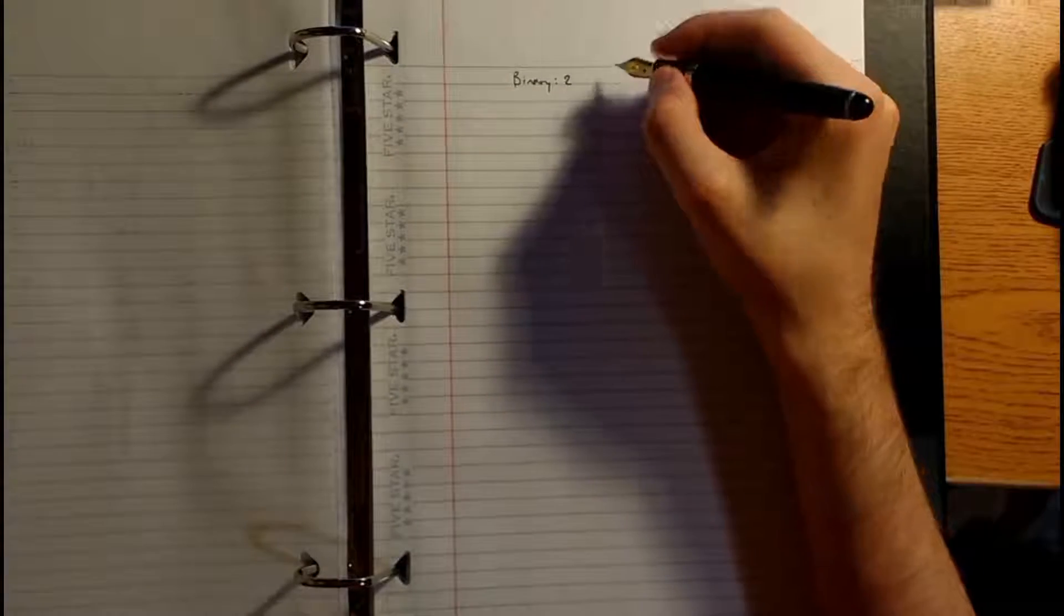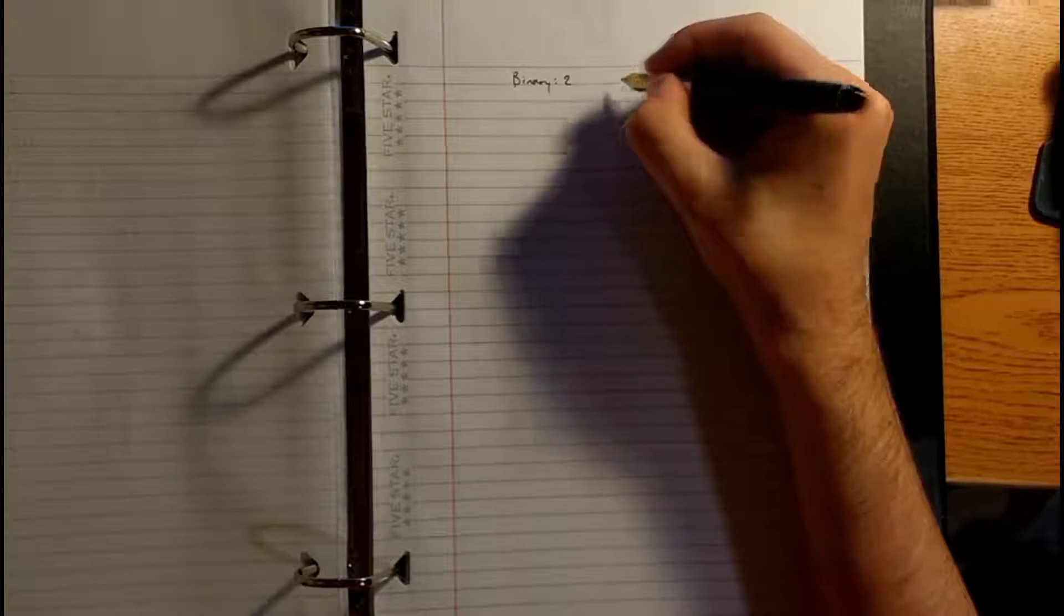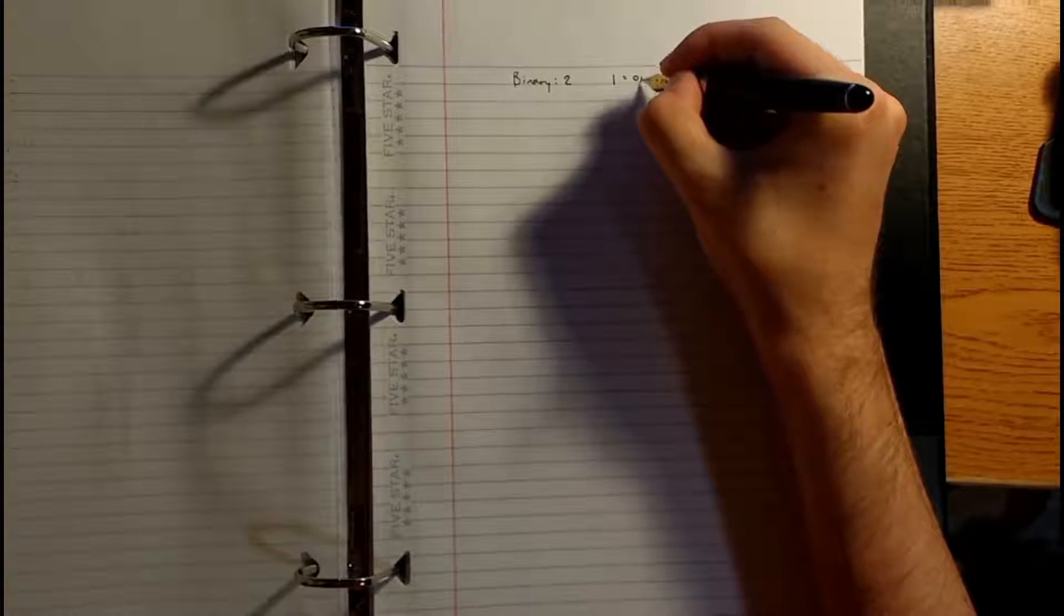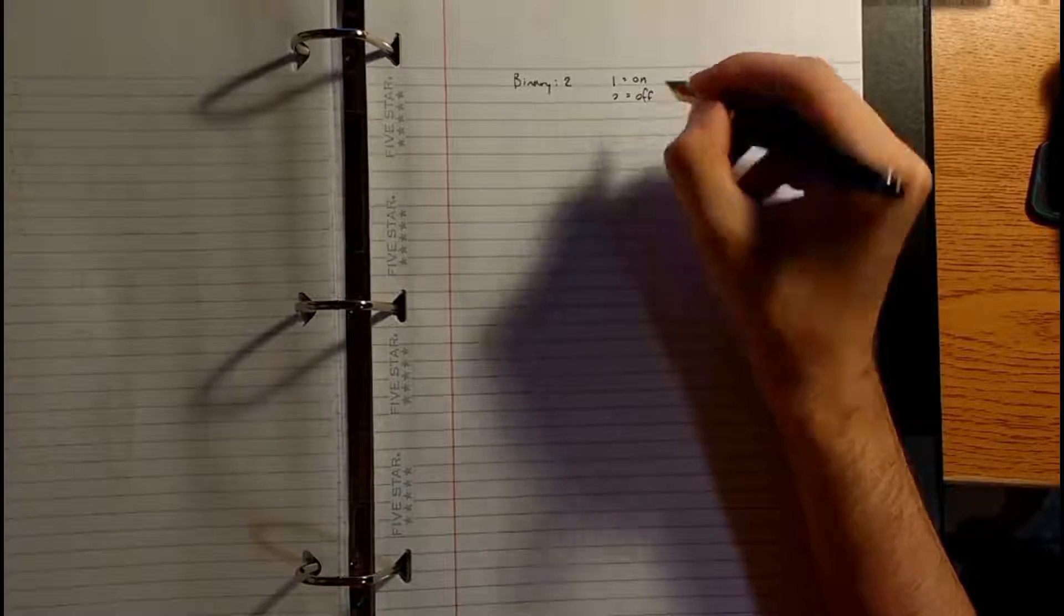By convention, and by convention I mean everybody does this, the United States does this as well. One means on in binary. And zero means off. You know what on also means? This also means true. And this means false.